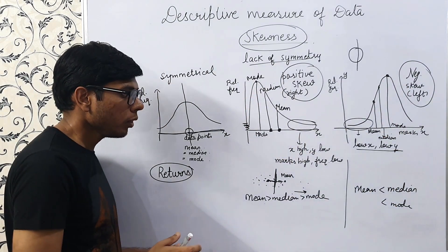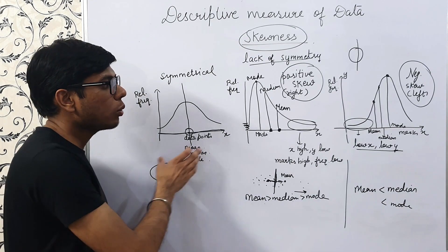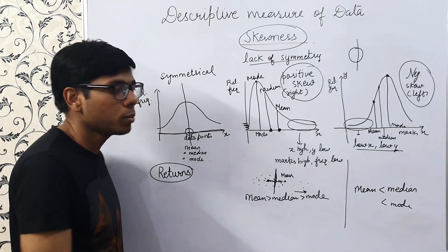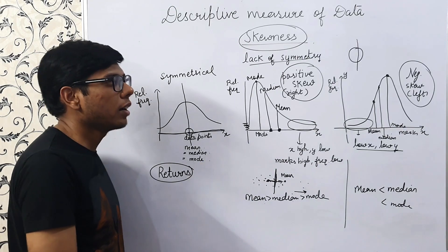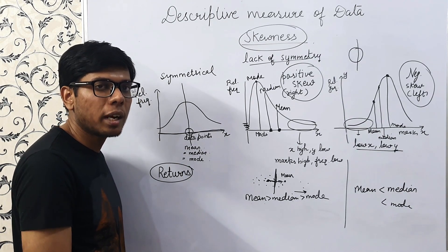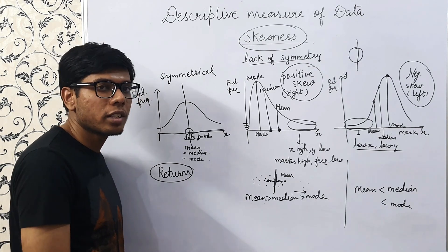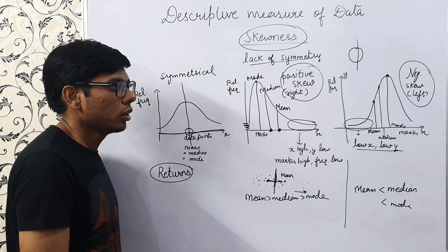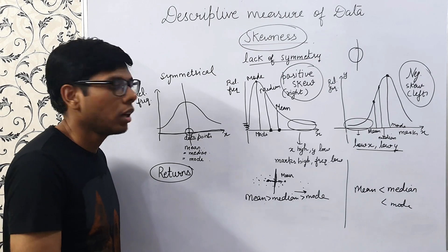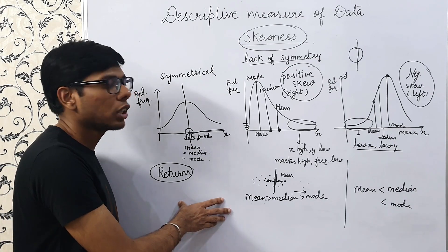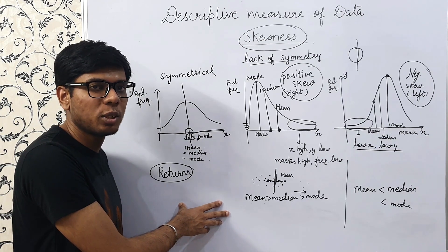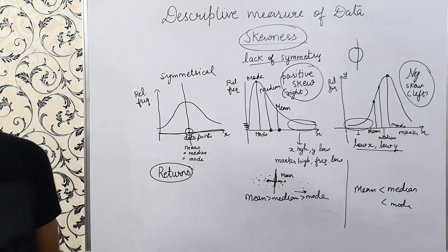Stay here, take some time, try to understand these things yourself — try to make graphs and see what increases and what decreases, because it takes some time to understand. If you have any queries, do feel free to comment in the comment section below. I'll try to address it as soon as possible. Hope you liked this video. I'll share the mathematical formulas for skewness in another video. Please like the videos and subscribe to my channel. Thank you, see you next time. Bye-bye.